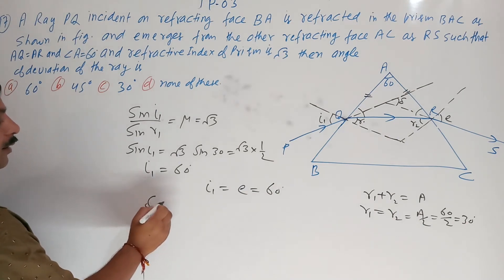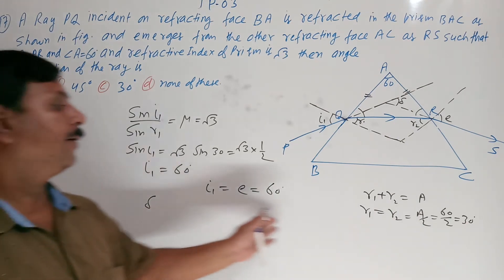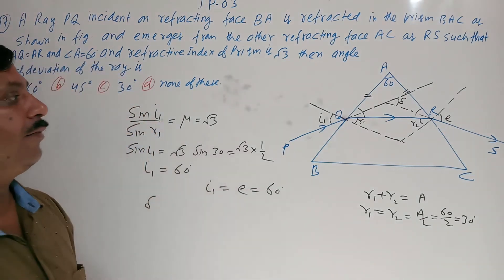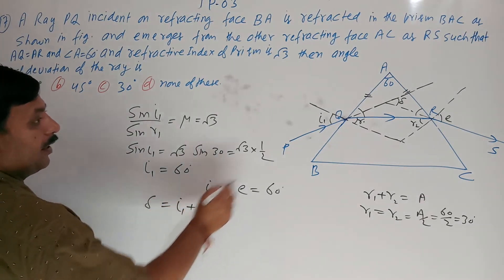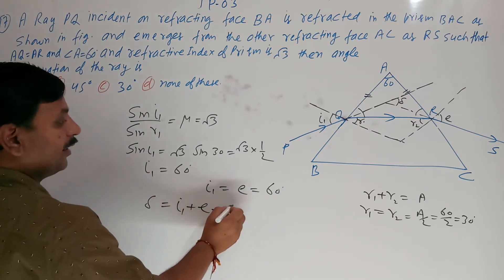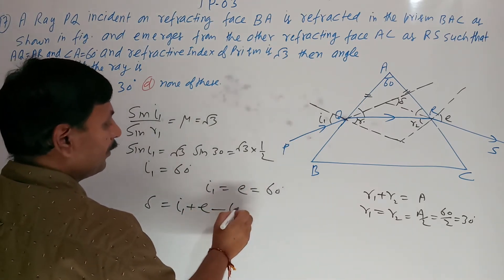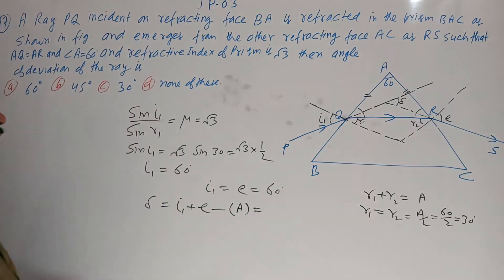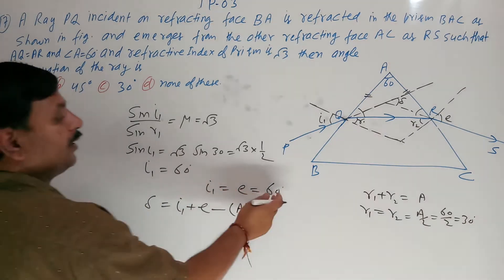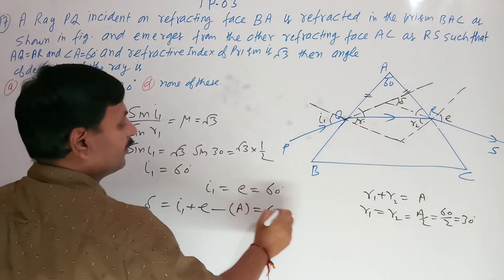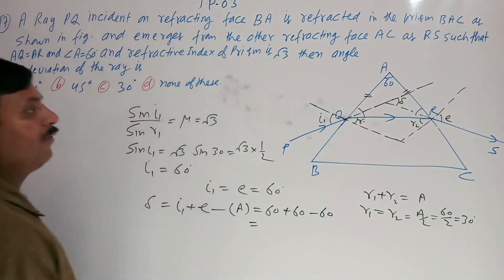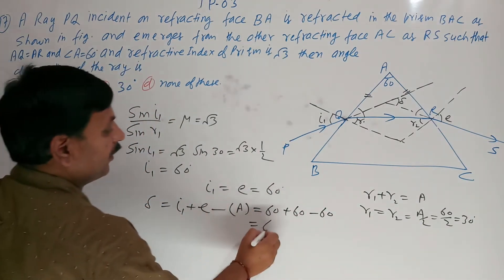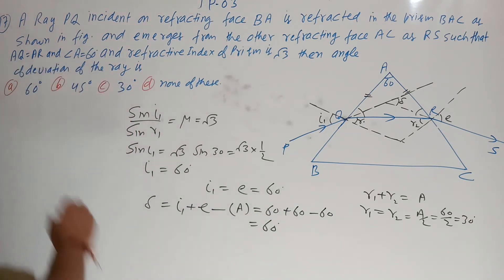Using the deviation formula: delta equals I + E − (R1 + R2) equals I + E − A. With I and E both 60 degrees and A equals 60 degrees: delta equals 60 + 60 − 60 equals 60 degrees. The angle of deviation is 60 degrees. Option A is correct.